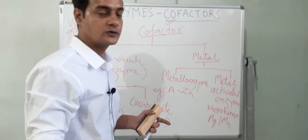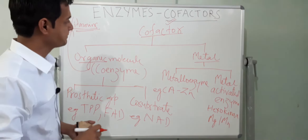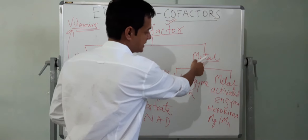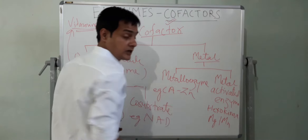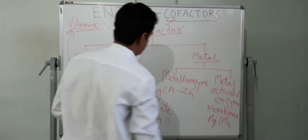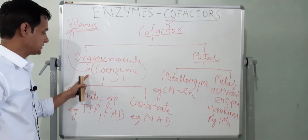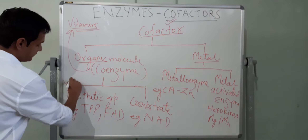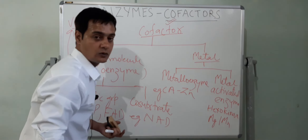In summary, cofactors can be of two types: organic molecules or metals. If the metal is tightly bound, the enzyme is a metalloenzyme; if loosely bound, it is a metal-activated enzyme. If the cofactor is an organic molecule, it is called a coenzyme. If the organic molecule is tightly bound, it is a prosthetic group; if loosely bound, it is a co-substrate.